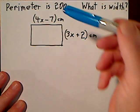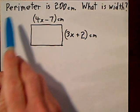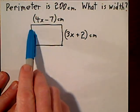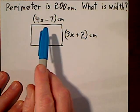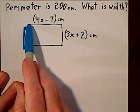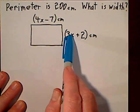In this problem we're given that the perimeter is 200 centimeters. The perimeter is the distance all the way around the rectangle. They've given us a representation of the length and the width but each has a variable in it.